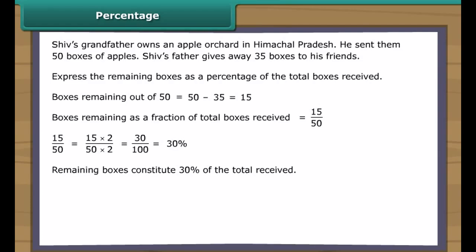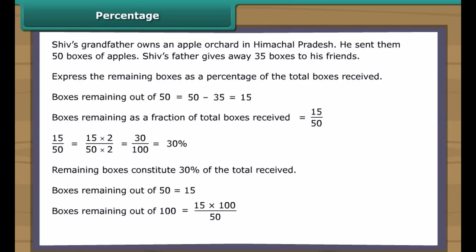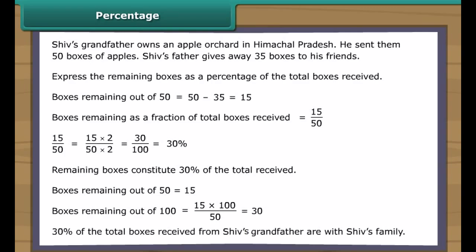Using the unitary method for the same question: boxes remaining out of 50 is equal to 15. Boxes remaining out of 100 equals 15/50 into 100, which equals 30. Therefore, 30% of the total boxes received from Shif's grandfather are with Shif's family. Both methods yield the same answer.